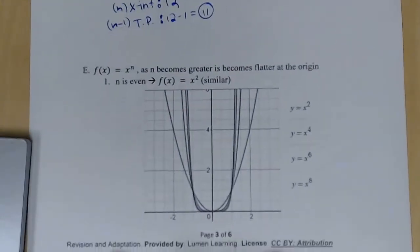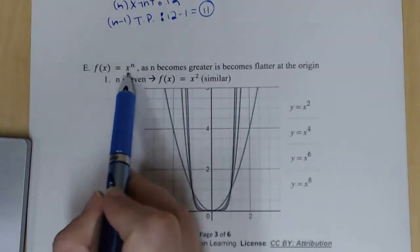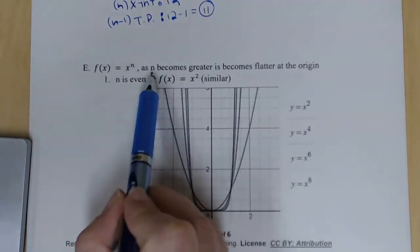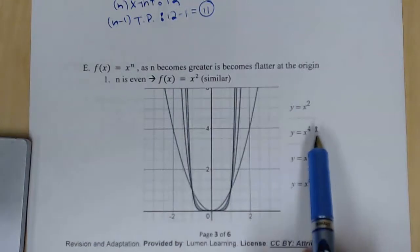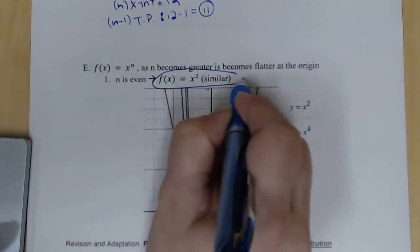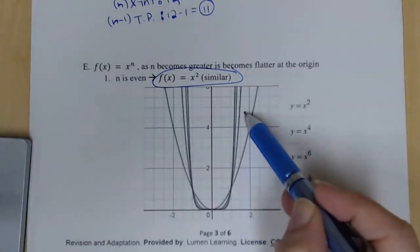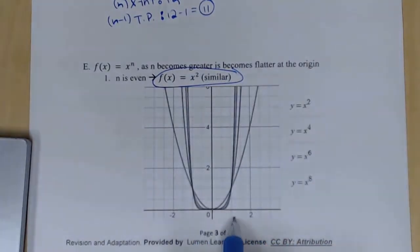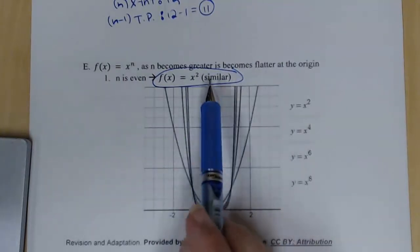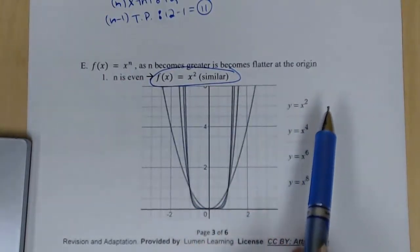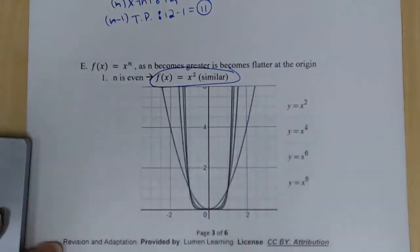Consider the parent function f(x) = x^n. As n becomes greater, it gets flatter at the origin. If n is even — such as x², x⁴, x⁶, x⁸ — the function is similar to x² and both arms go up. You can see from the graph that x², x⁴, x⁶, x⁸ all share the same end behavior, getting flatter and flatter at the origin. Knowing that all even-powered functions are similar to x² will help with end behavior.